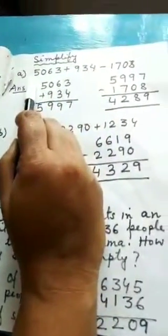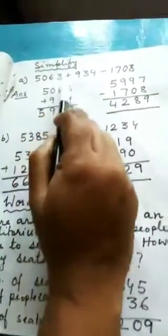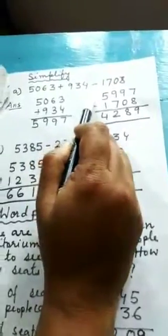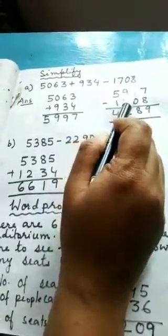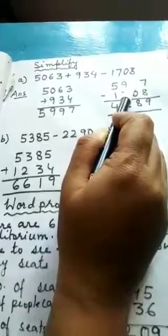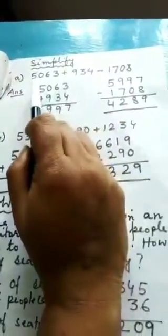Now, simplify. Simplify 5,063 plus 934 minus 1,708. How you will do this sum? First of all, you add the plus sign.